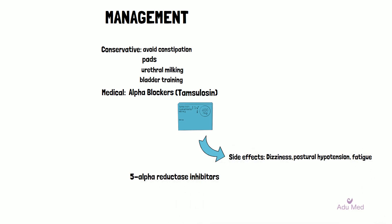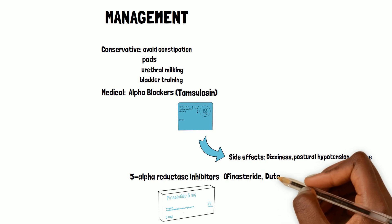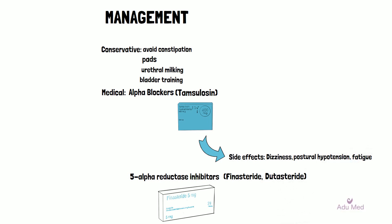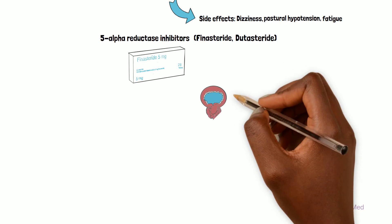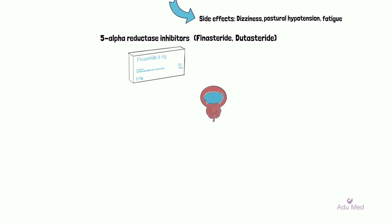5-alpha reductase inhibitors are generally used for men with enlarged prostates of more than 30 grams — roughly the size of a golf ball. Examples include finasteride and dutasteride. They work by blocking the conversion of testosterone to DHT, therefore reducing the size of the prostate. They work much slower than alpha blockers and can take 3 to 6 months before any improvement is seen. They can be used either on their own or in combination with alpha blockers.